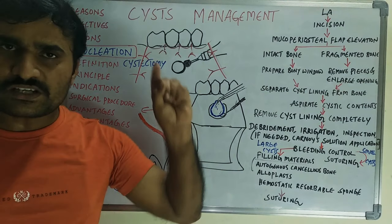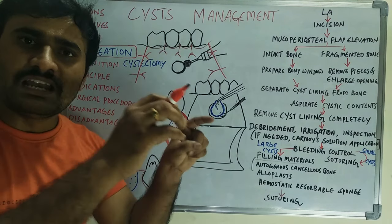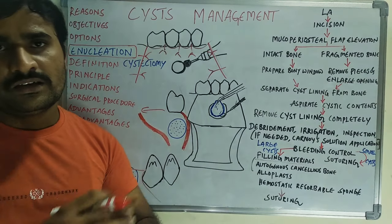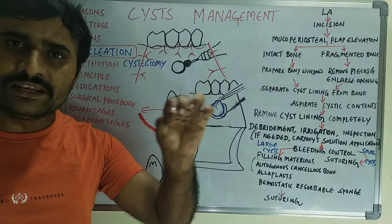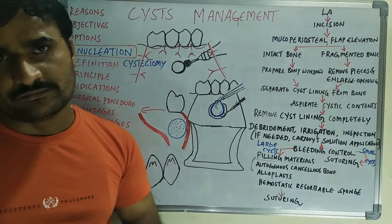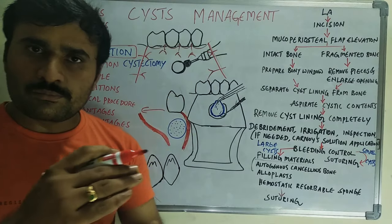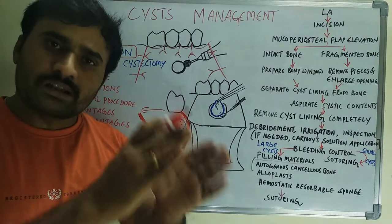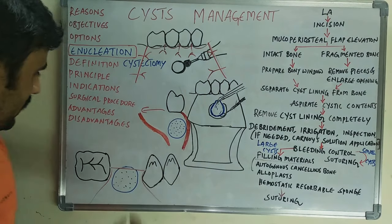The advantages of enucleation include: first, complete removal of the cystic lining so no pathological tissue is left in situ, allowing for better histopathological examination of the cyst lining. The second advantage is rapid recovery — after suturing, soft tissue healing occurs within seven to eight days, and though underlying bone formation continues for three to four months, the patient experiences no postoperative trouble after the first week.